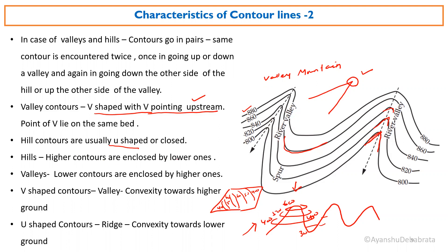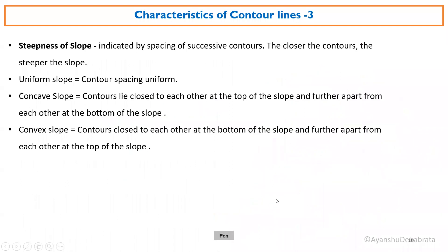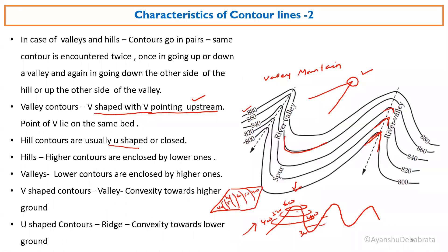For hills, the higher contours are enclosed by lower ones — the highest elevation is at center, surrounded by progressively lower contours. For valleys, the structure changes: the lowest elevation, say 300 meters, is at the center, surrounded by the higher contours 400, 500. So for hills, higher contours are enclosed by lower ones; for valleys, lower contours are enclosed by higher ones.